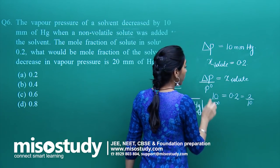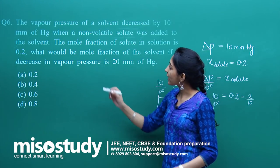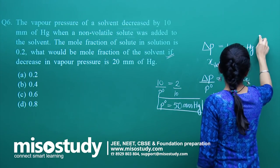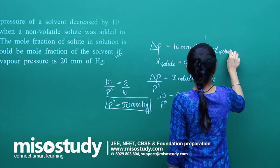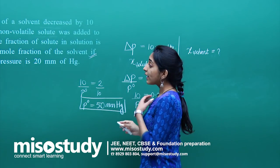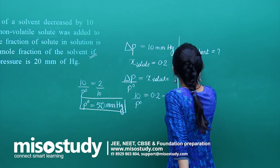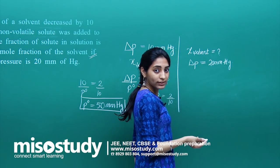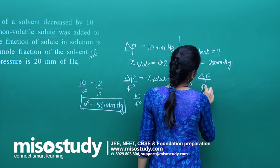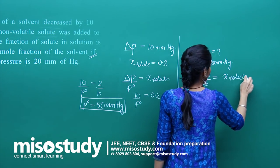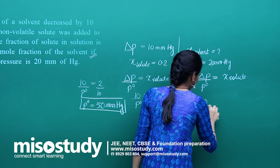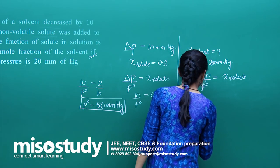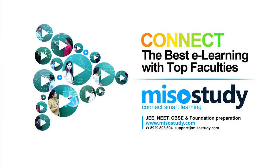Now the second part: what would be the mole fraction of solvent if the decrease in vapor pressure is doubled, i.e., delta P = 20 mmHg? Using the same formula: delta P / P₀ = mole fraction of solute. This time delta P is 20 and P₀ is 50 mmHg, so we can calculate the mole fraction of solute and then find the mole fraction of the solvent.